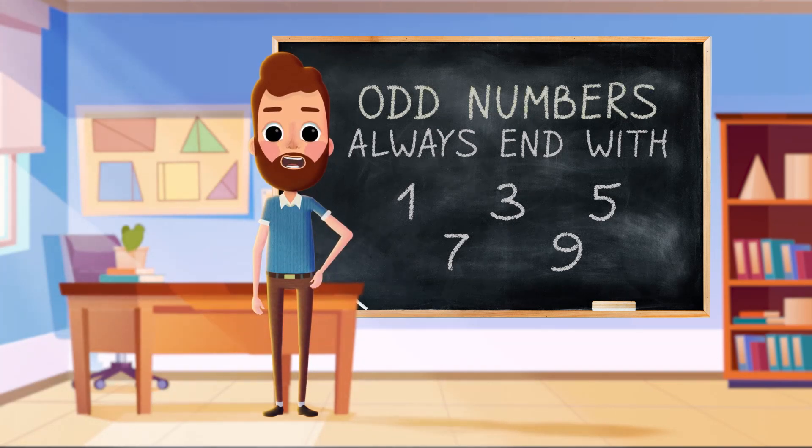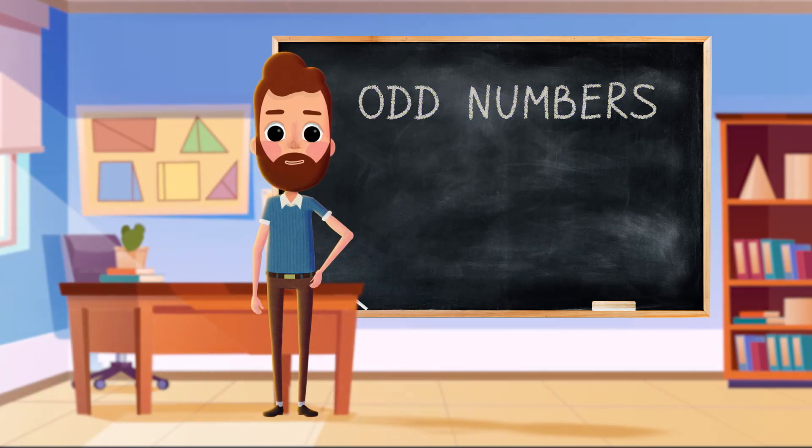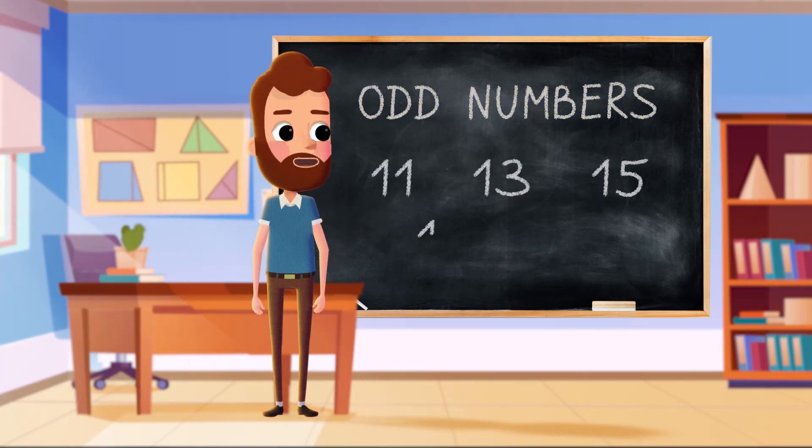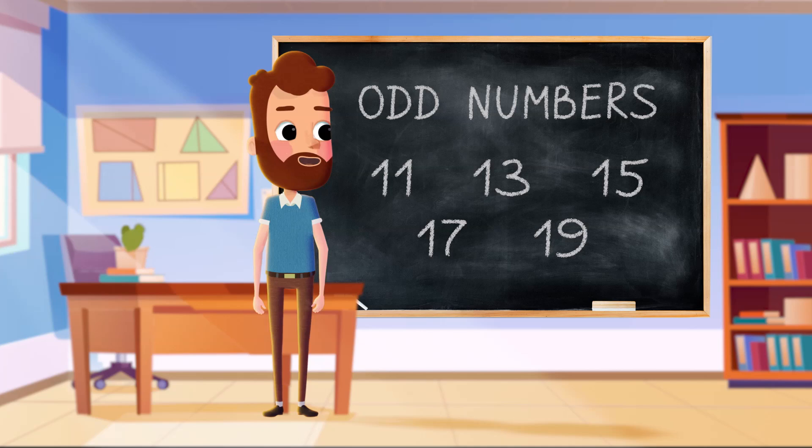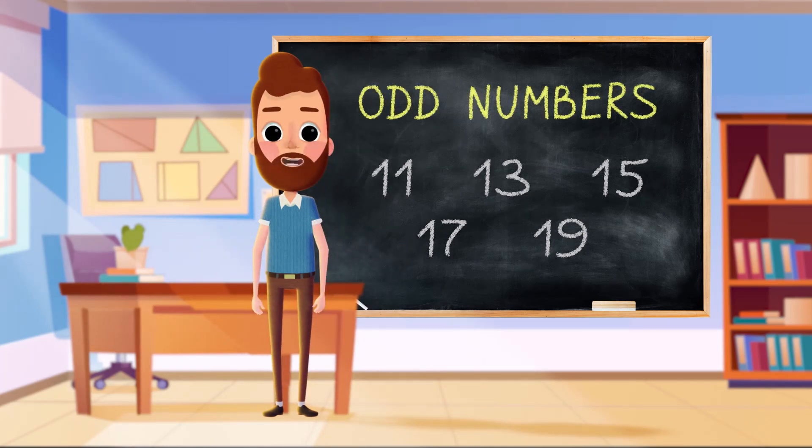7, and 9 are all odd numbers. 11, 13, 15, 17, and 19 are all odd numbers.